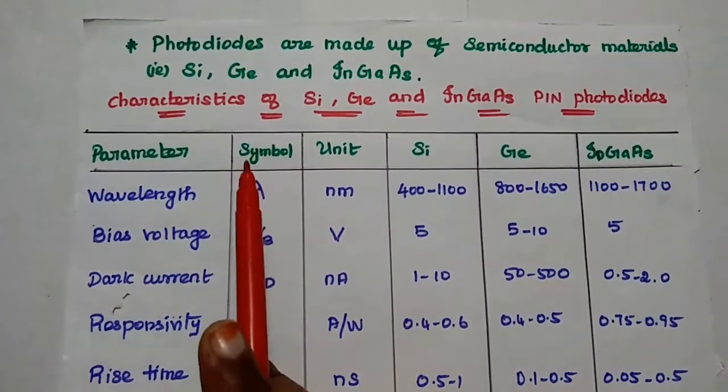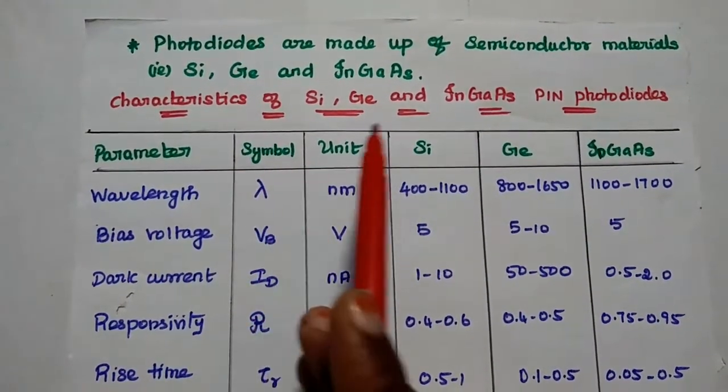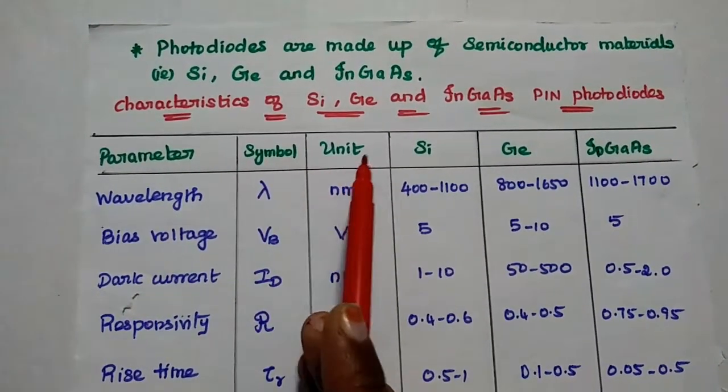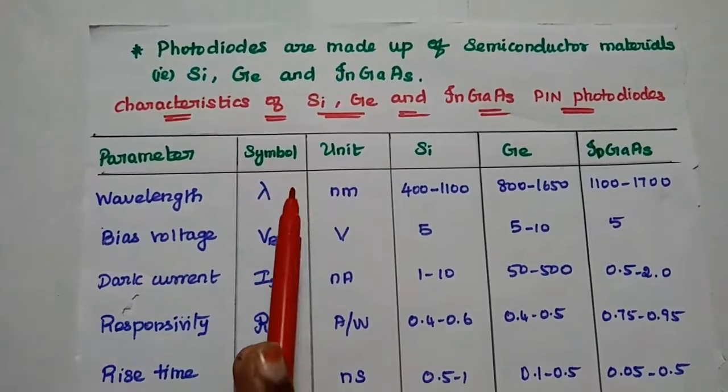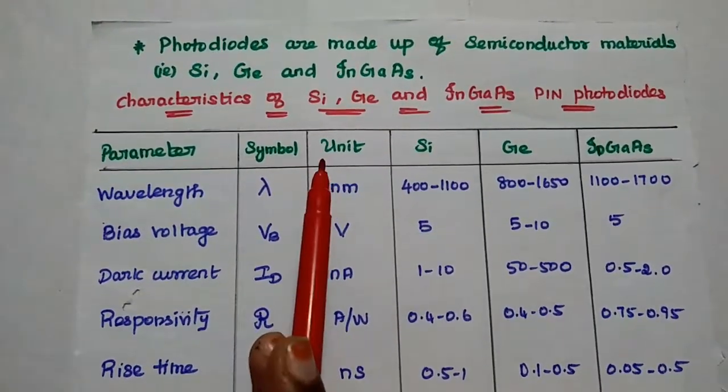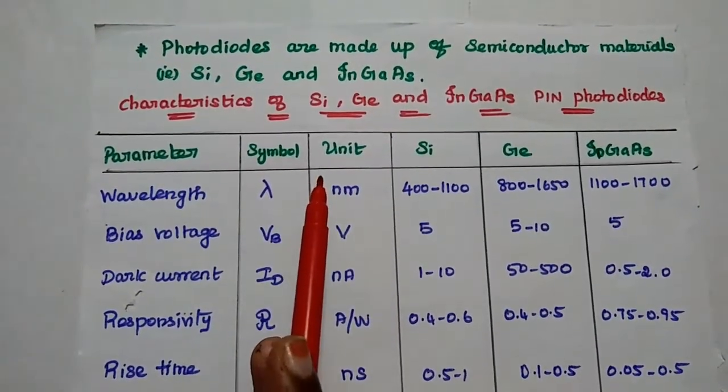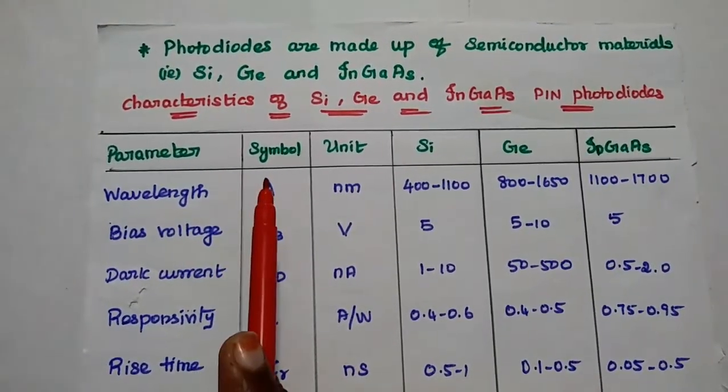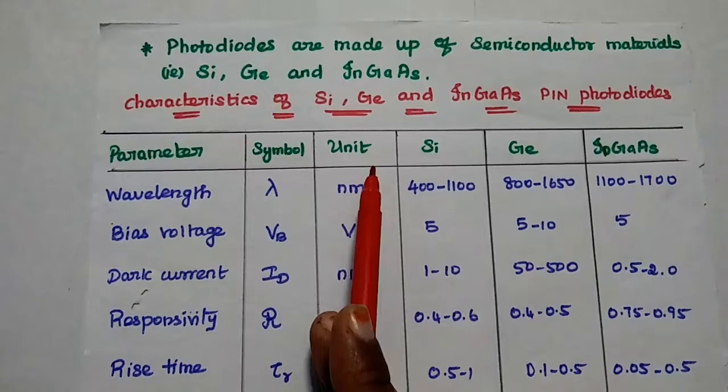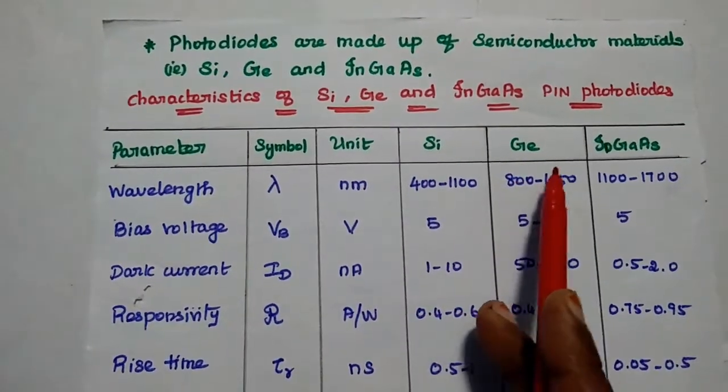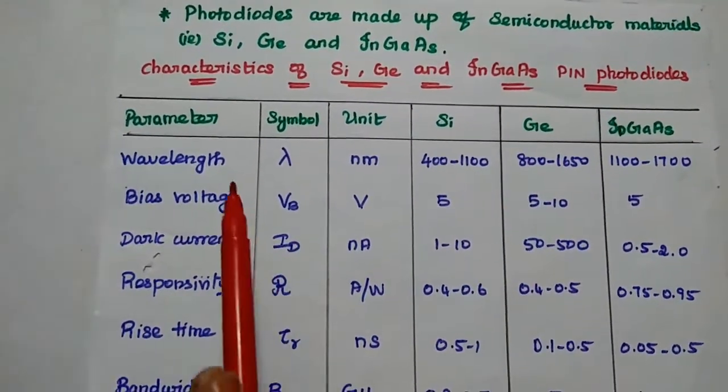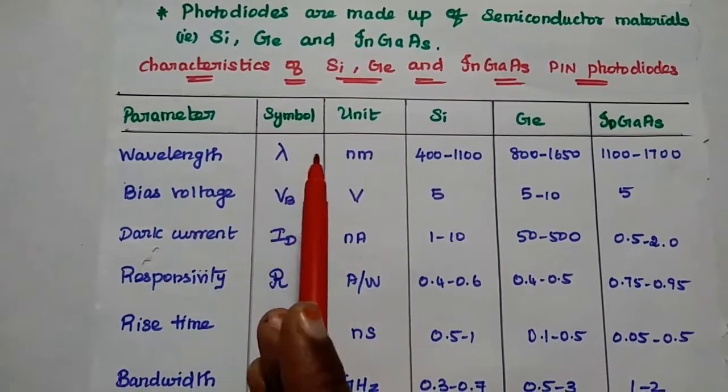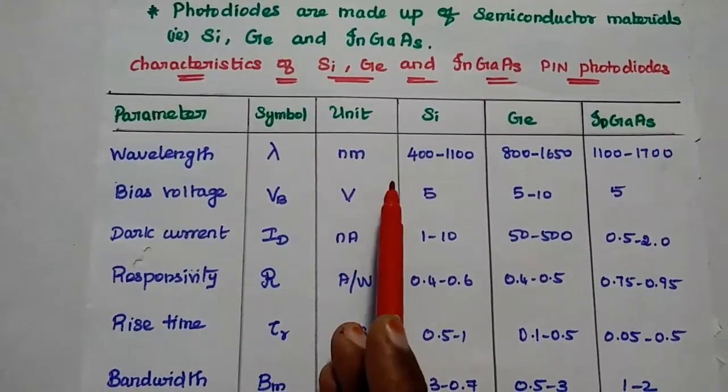In general, photodiodes are made up of semiconductor materials like silicon, germanium, or indium gallium arsenide. So, based on the semiconductor materials, the PIN photodiodes are having different characteristics. So we are going to discuss the characteristics of silicon, germanium, and indium gallium arsenide PIN photodiodes here. Based on the parameters like wavelength, its symbol is lambda. Here the unit is nanometer.